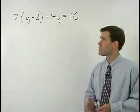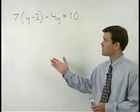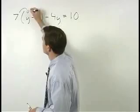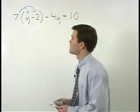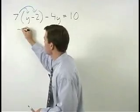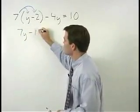In this equation, our first task is to simplify the left side. So we start by distributing this seven through both terms inside the parentheses. Seven times y is seven y and seven times negative two is negative fourteen.